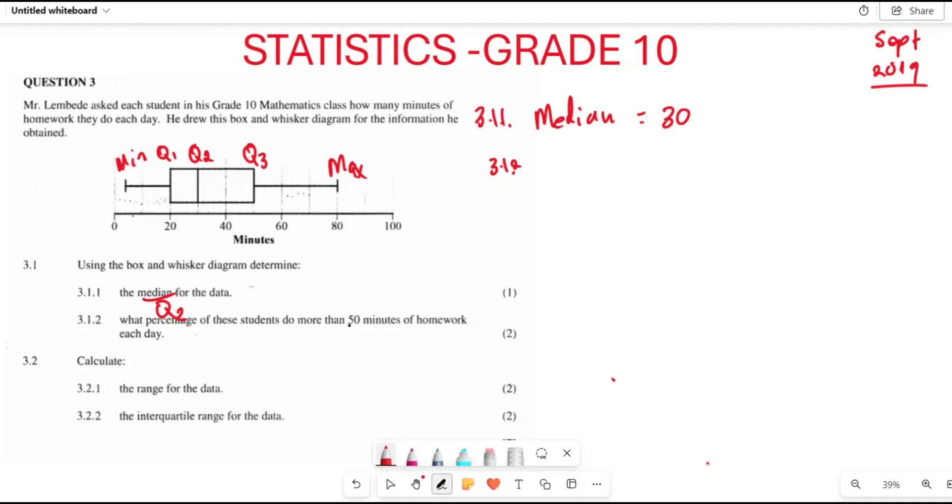They want us to check how many learners do their homework for more than 50 minutes. So 50 is here, and the maximum is 80.